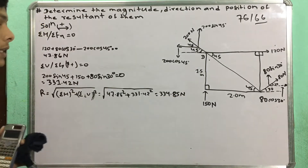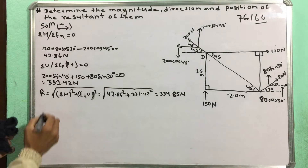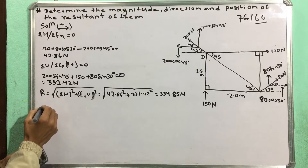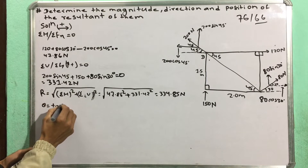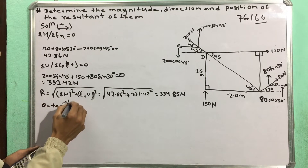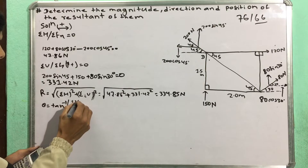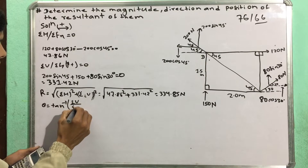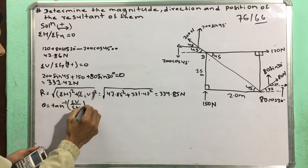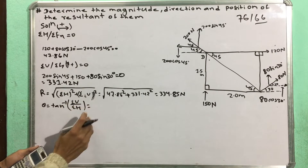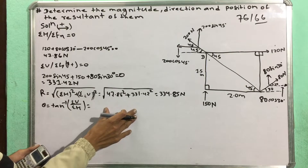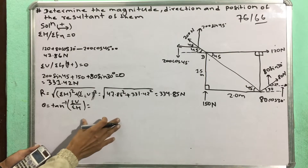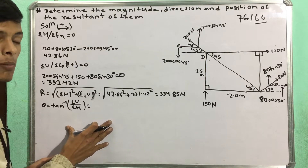The resultant angle is the inverse tangent of vertical over horizontal.